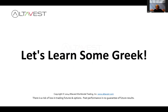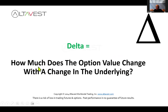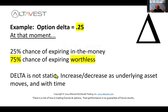Before we go deeper into the demo, let's learn some Greek letters. How would you determine probabilities on any given option? That's known as the delta — it represents how much the option value changes with a change in the underlying index. Option traders look at it as the approximate probability of that option expiring in the money. For example, if there's a delta of 0.25 on an option, that means there's a 25% chance it will expire in the money, but conversely a 75% chance it would expire worthless. Remember, delta is always moving as prices and time move — it's not static, and it is not the probability of a winning trade.